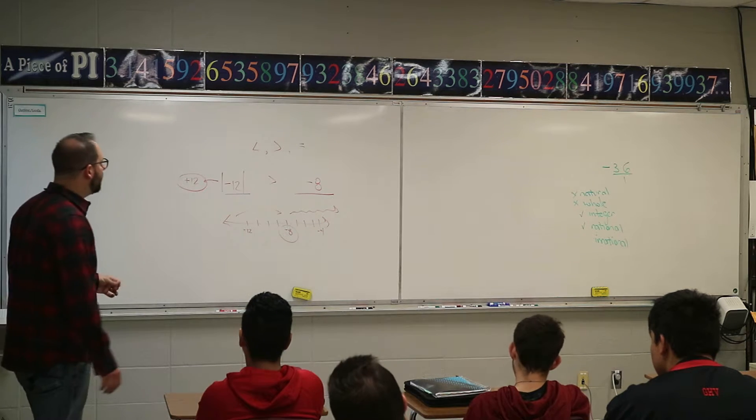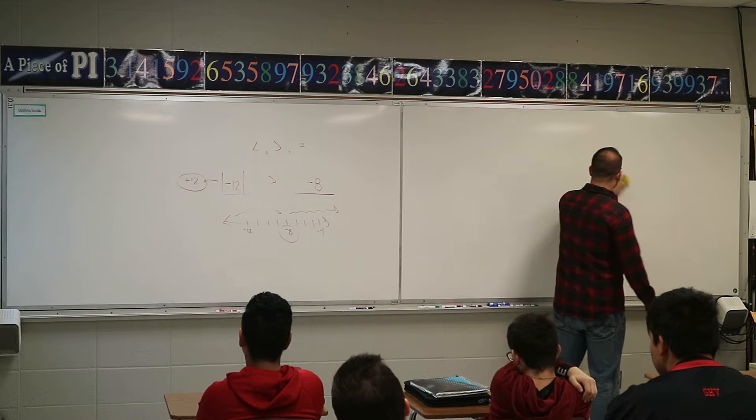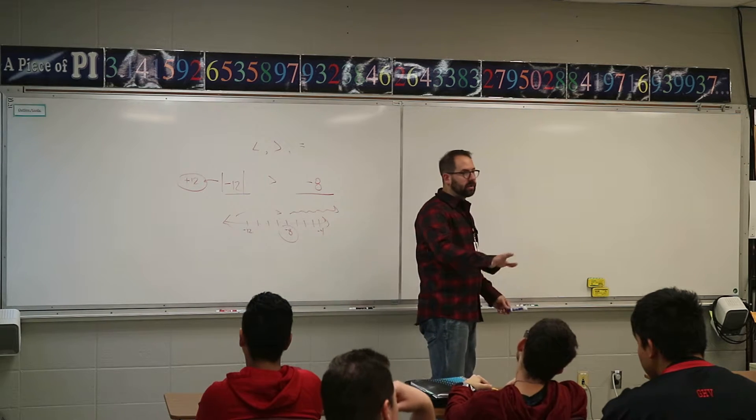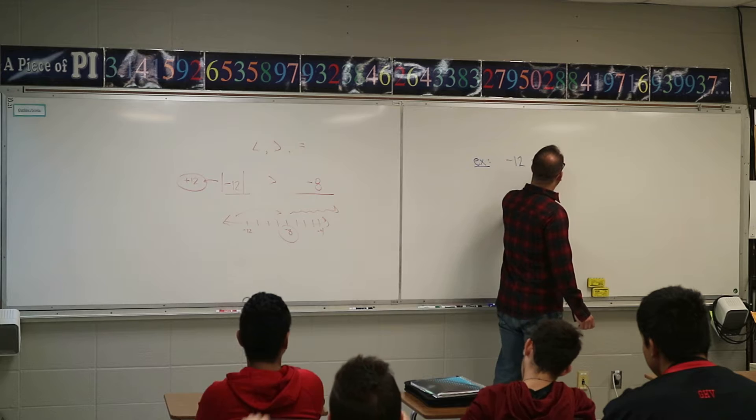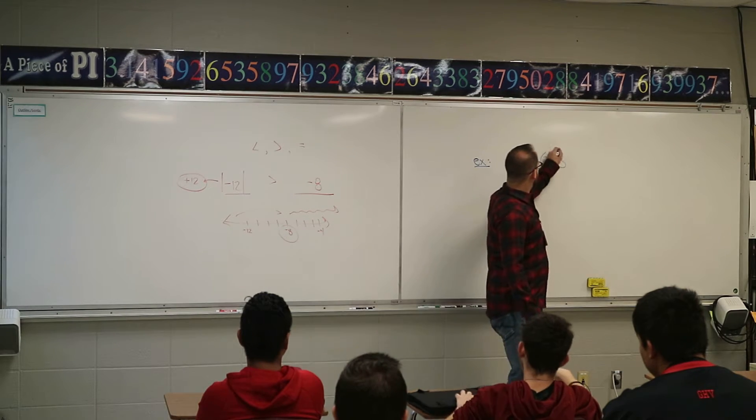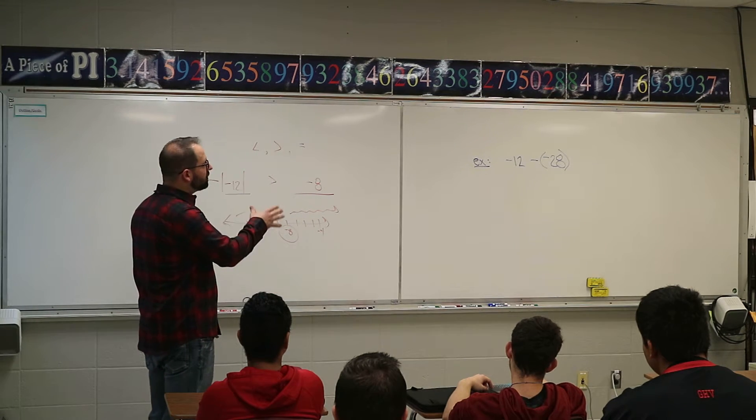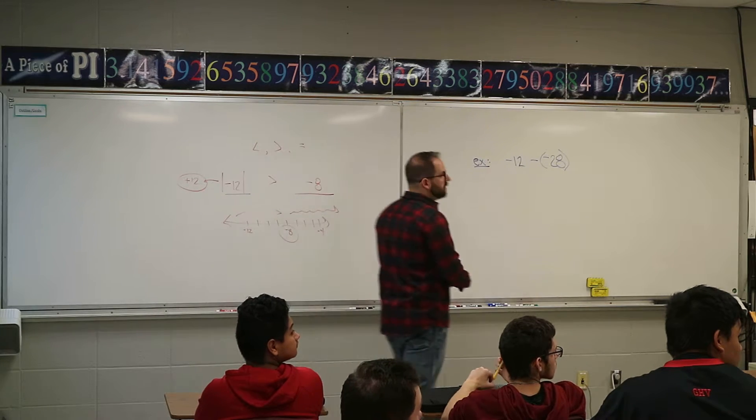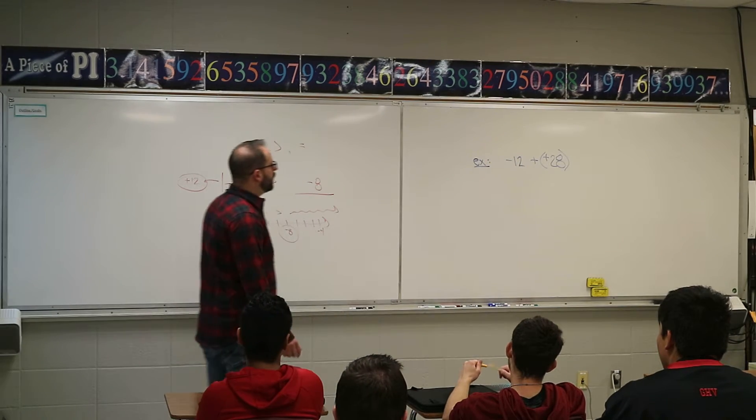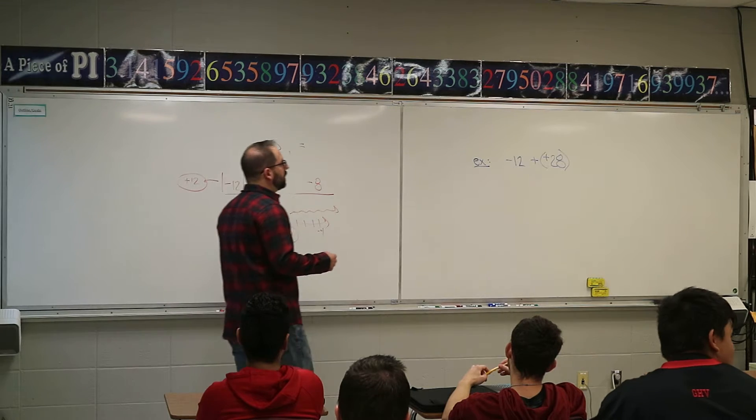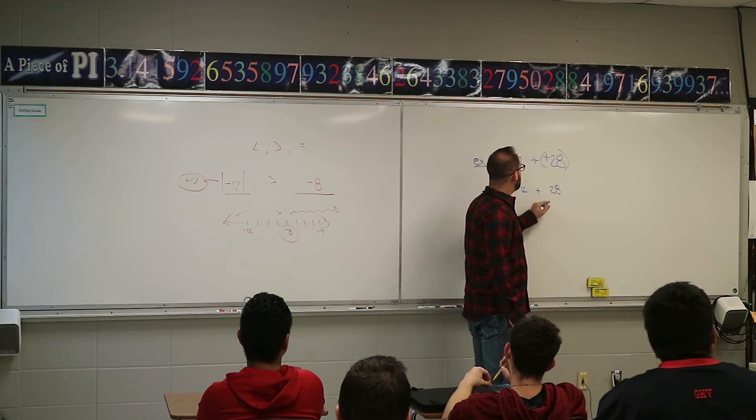Then we started talking about adding and subtracting negatives. This is our last problem of the day. If I had negative 12 minus a negative 28, the first thing I should do is cancel the double negative in the middle. Cancel the double negative. Now since I canceled the double negative in the middle, this is now negative 12 plus 28.